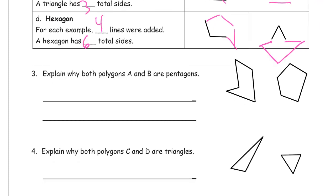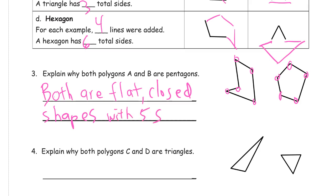Explain why both polygons A and B are pentagons. Well, what does it have to be to be a pentagon? It has to be a polygon with five sides or five angles, right? 1, 2, 3, 4, 5. 1, 2, 3, 4, 5. So I could say both have five angles, or both have five straight sides. If we really want to be careful about it, that both are flat, closed shapes with five straight sides.